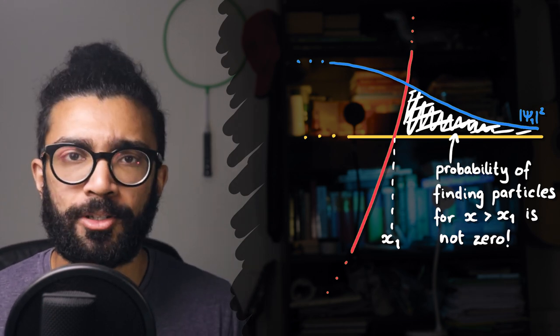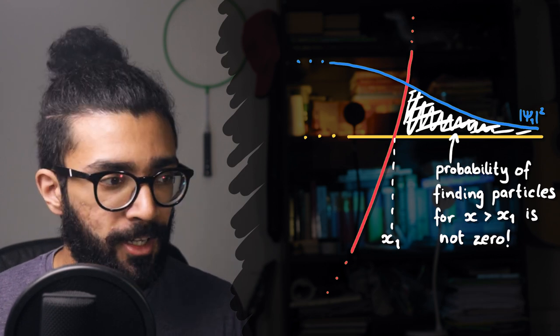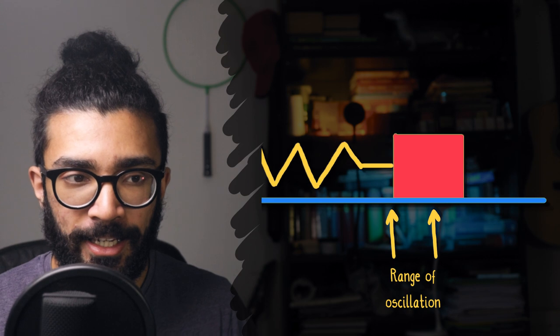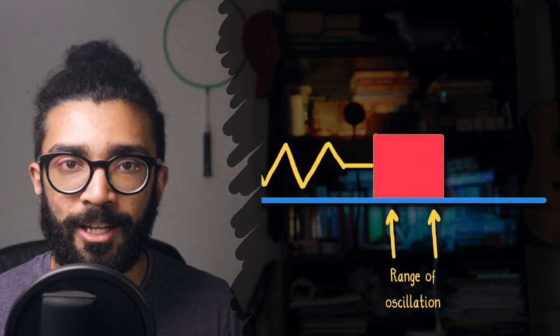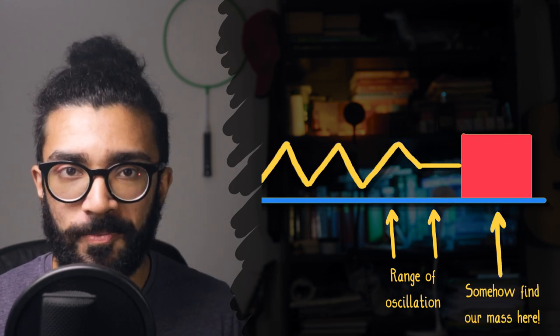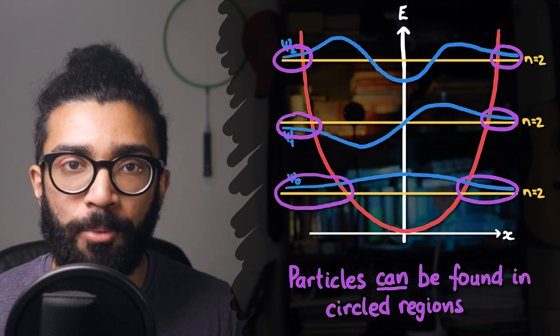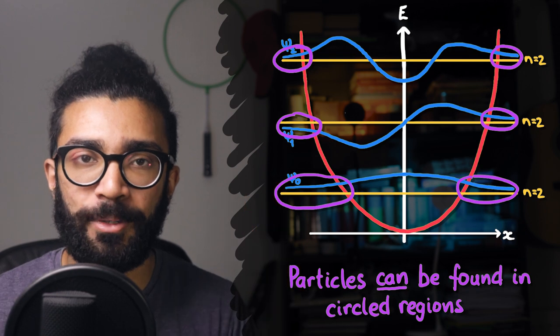This completely goes against our classical intuition. If we come back to our classical harmonic oscillator from earlier, this is the equivalent of saying that we set off our spring oscillating, and at some point we are likely to find our mass over here, for example. But what we've just seen for the quantum harmonic oscillator is that we can find particles in these classically forbidden regions.